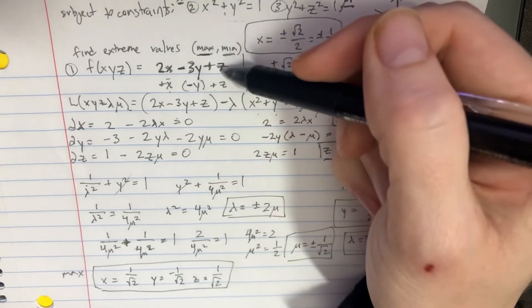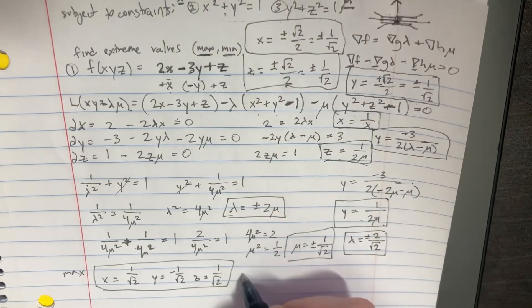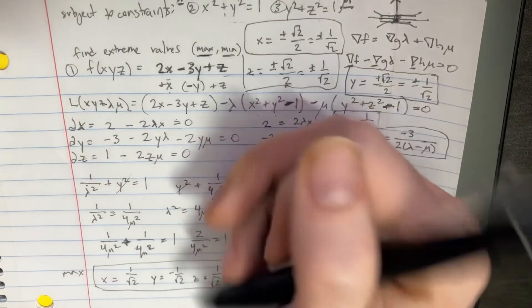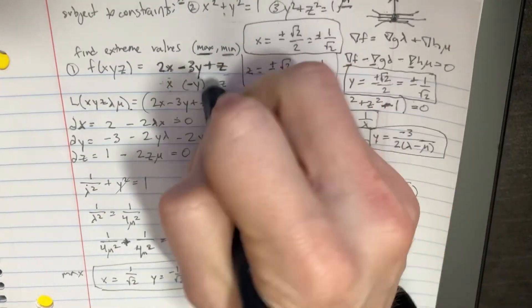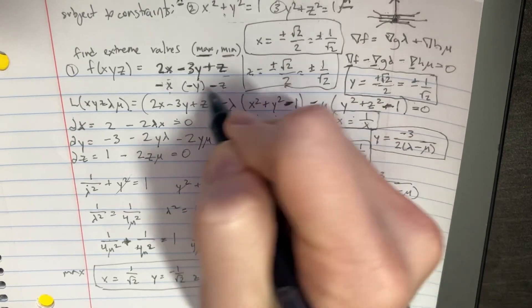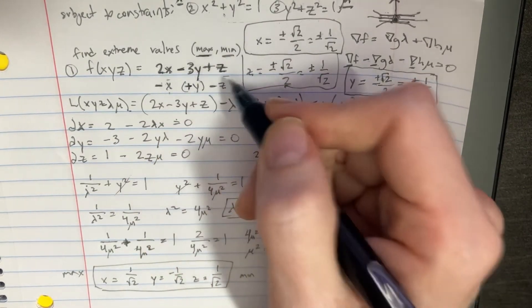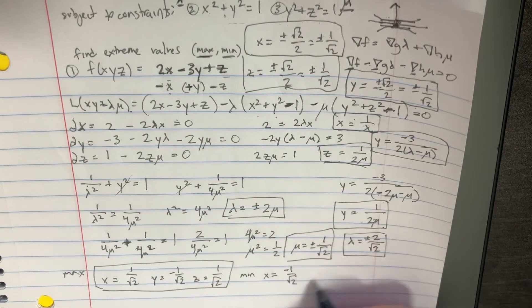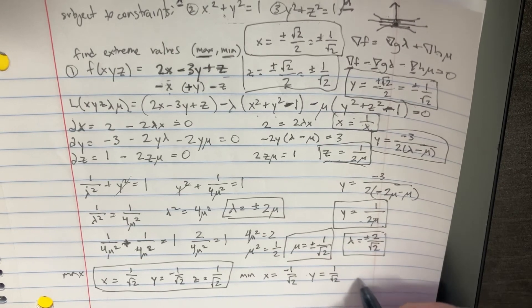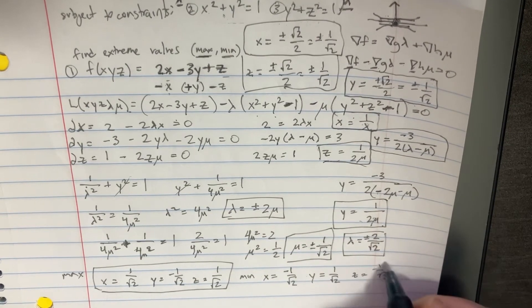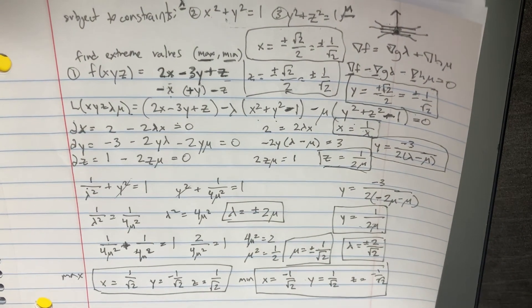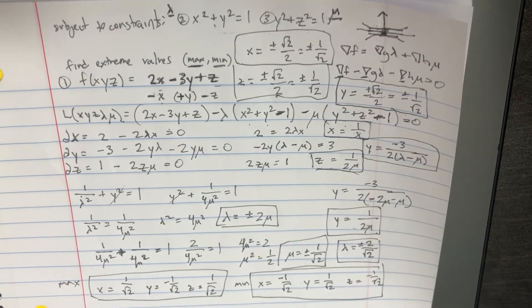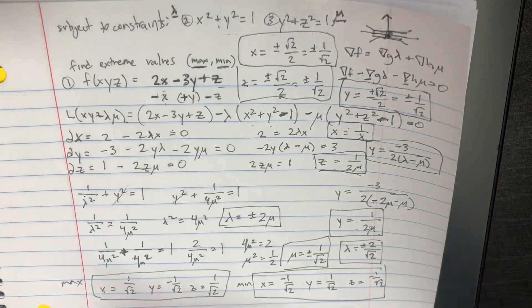We could plug those in to find the maximum number. For the minimum value, we would say the opposite — we want the highest negative value. So we switch: x equals negative 1/√2, y equals positive 1/√2, and z equals negative 1/√2 — giving us negative, negative, negative. That way we'll be at the minimum point. We have found our maximum and minimum points, and we would just plug them in to find the actual values.